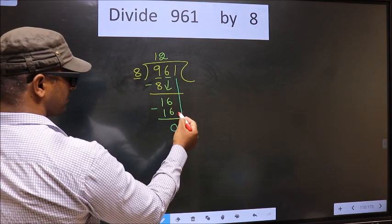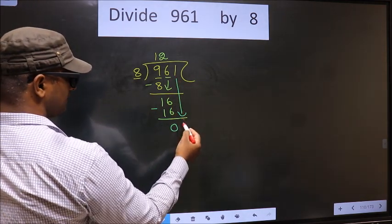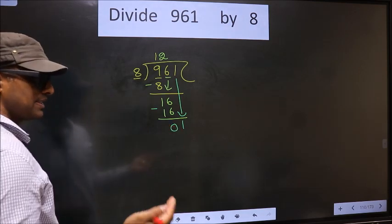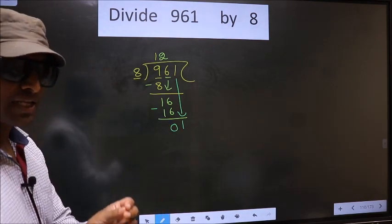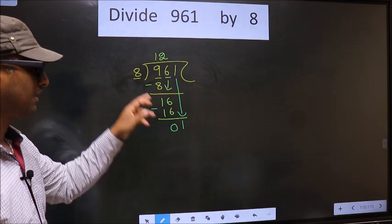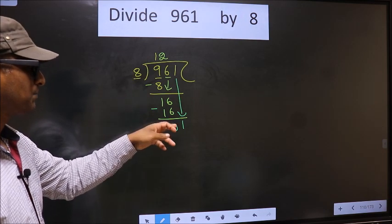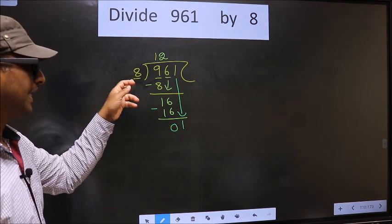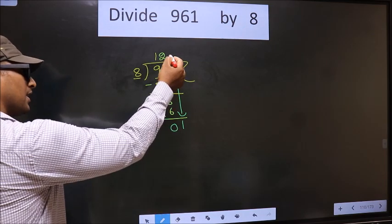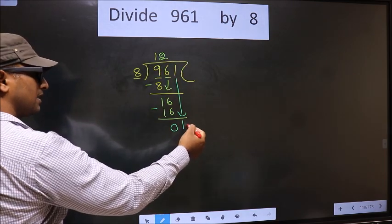Now you will bring down the beside number. That is 1 down. This is where the mistake happens. Here we have 1, here 8. 1 is smaller than 8.